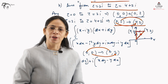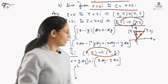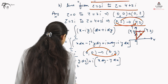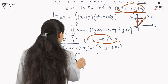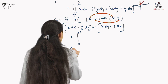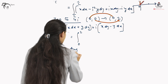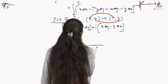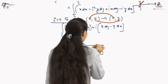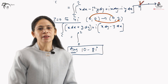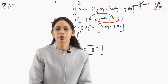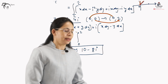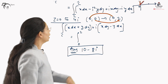I leave this question for you to solve and you can match your answer. The final answer will be 10 − 8i. You can solve it using the methodology explained in question 1 and then match your answer.